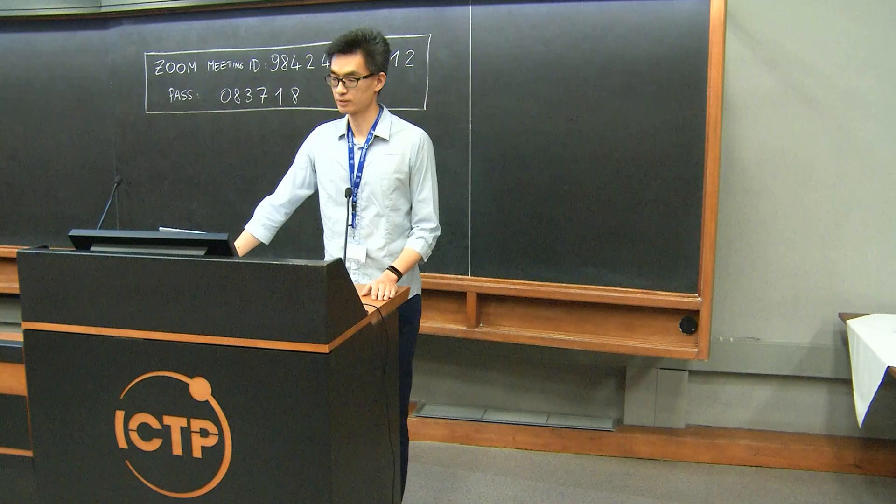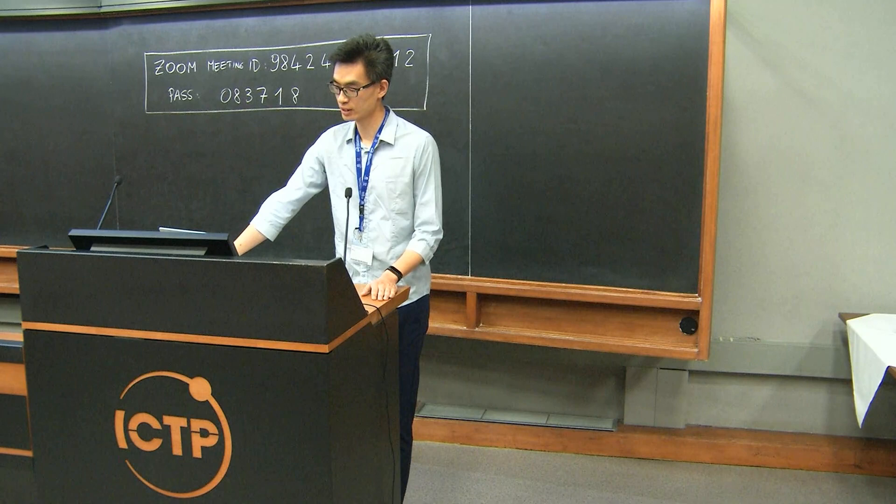Our experimental setup: to control the qubit, we have a DC current that's coupled to the X flux of the qubit that allows us to set the tunneling amplitude delta, and we have a DC FAST-AWG combined to control the Z flux, so that allows us to sweep the Z flux with different timescales. We also have a capacitively decoupled microwave signal to do spectroscopy and coherence measurement on the qubit. To read out the qubit state, we use a transmission measurement through a flux-sensitive resonator. That's this blue circuit here.